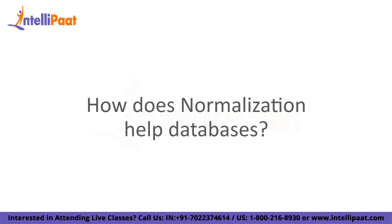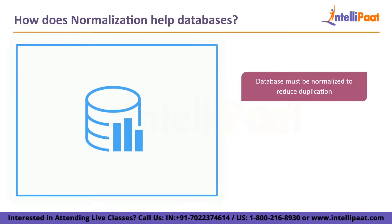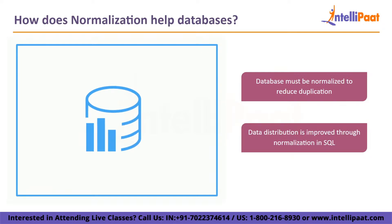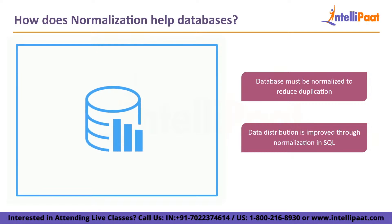Normalization helps databases by reducing duplication — more technically termed redundancy — and ensuring only relevant data is kept in each table. It also prevents problems caused by insertions, deletions, and updates. Data distribution is improved through normalization in SQL, and the database data needs to be standardized before interaction can start. Additionally, normalization makes it simpler to construct a database with an ideal atomic element structure.